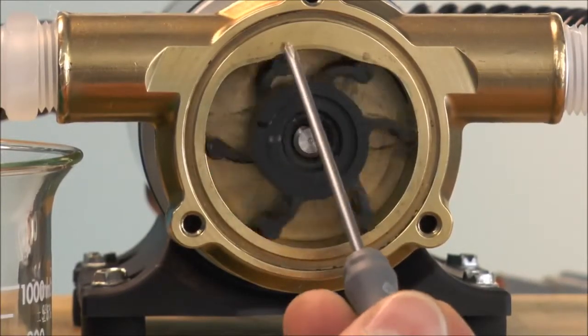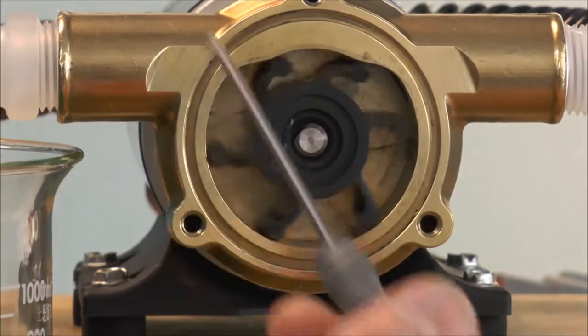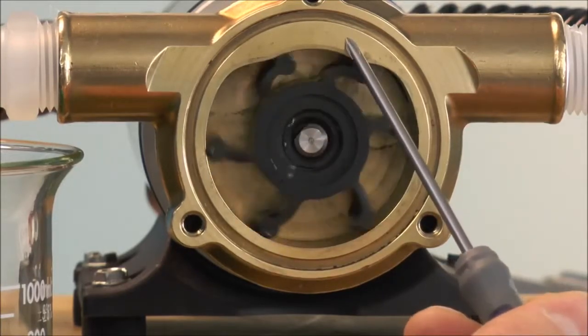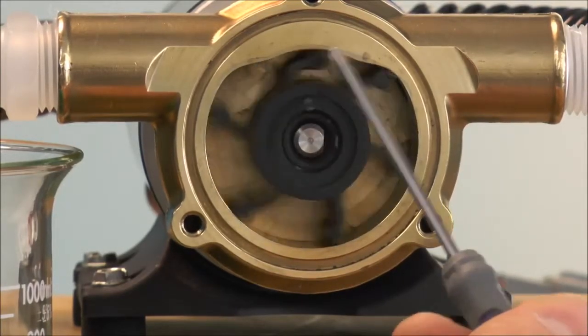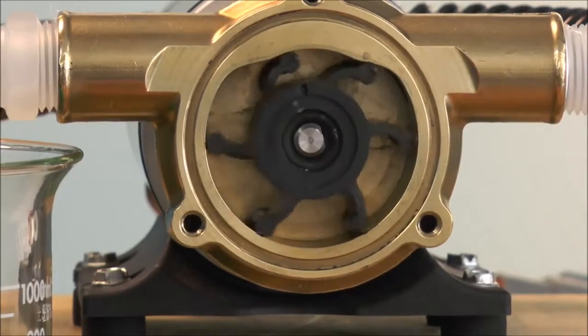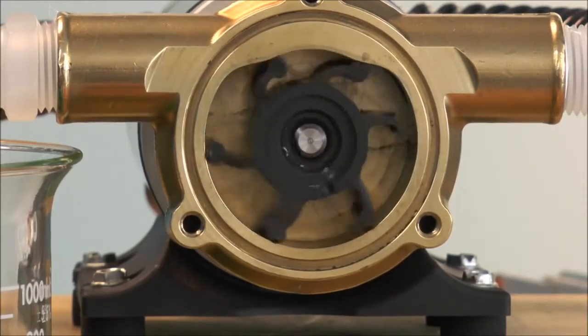What that does is once the veins come on this side it creates a negative pressure which draws the fluid up into the impeller cavity down and around. And again that cam squeezing those veins, folding them over, pushing the fluid out to discharge. What we're going to do is we're going to put a clear end cover on and give you a better idea of what's going on inside the impeller pump.